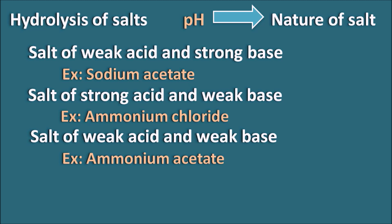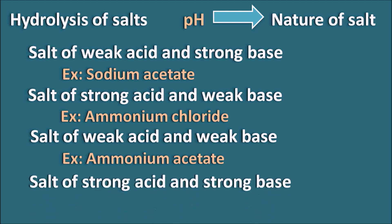Finally, we can have salts of strong acid and strong base — the best example is sodium chloride, obtained from hydrogen chloride and sodium hydroxide. In this way we have four types of salts based on the nature of the acid and base involved in salt formation.